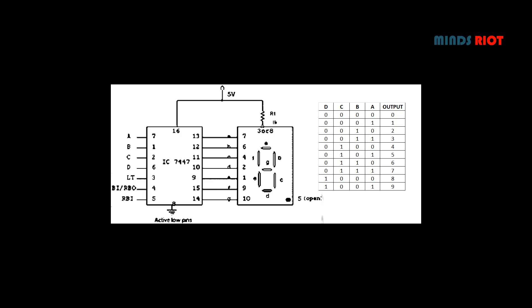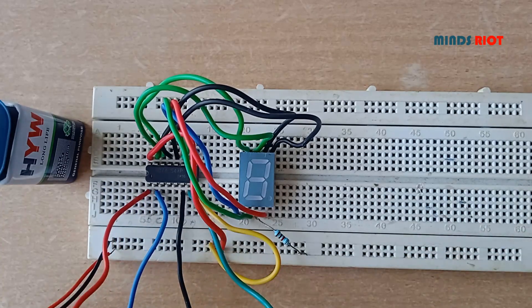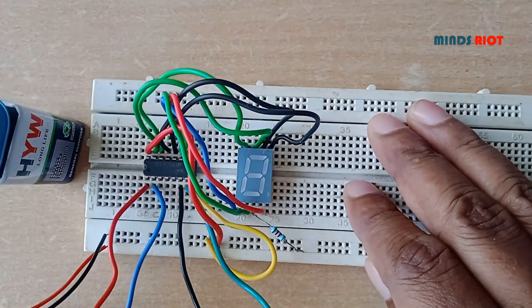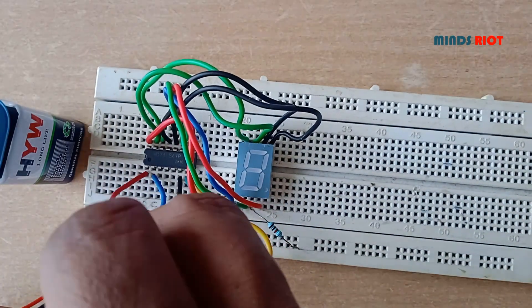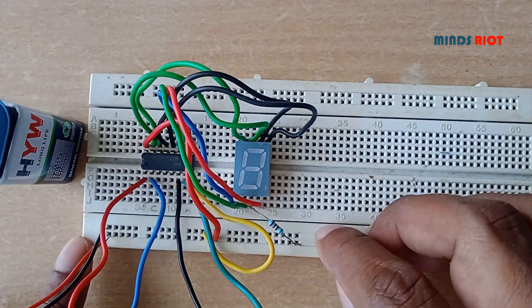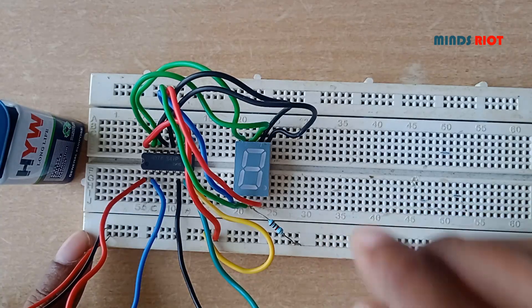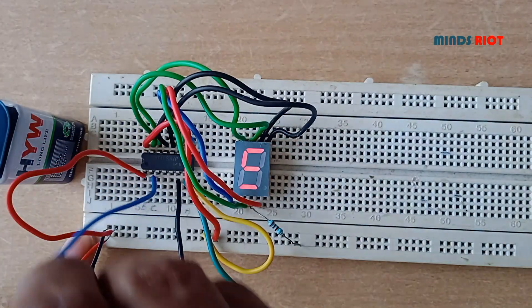The table shows ABCD inputs with respect to outputs. The 4 inputs A, B, C, and D are connected to pin numbers 1, 2, 6, and 7. As it is a common anode 7-segment display, the common pin is connected to VCC.